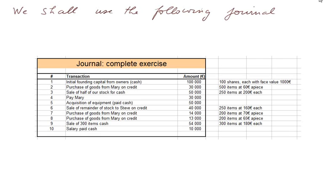A complete exercise, part 2. We continue posting this journal and we reached in the previous part transaction 6. So we shall treat transactions 7, 8, 9, and 10. In fact, after 9 we shall also pass two transactions for amortization and provision.